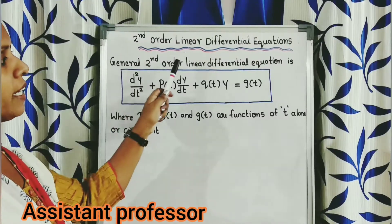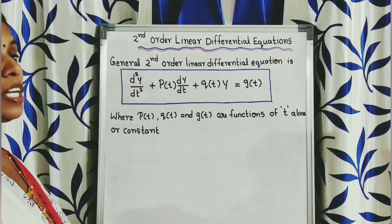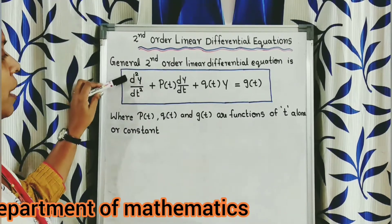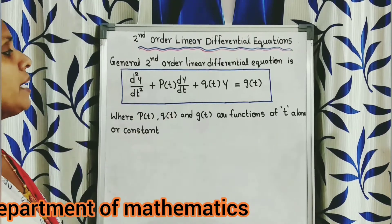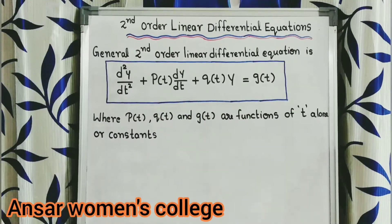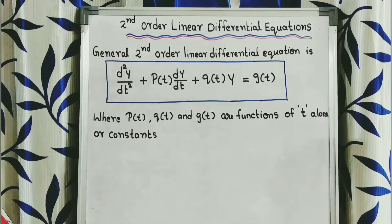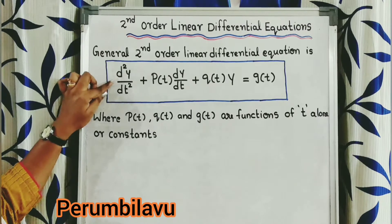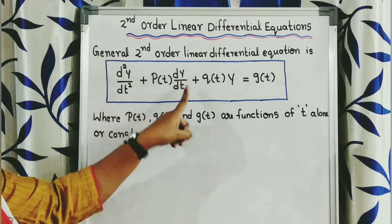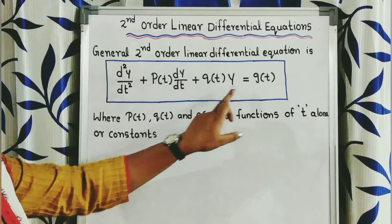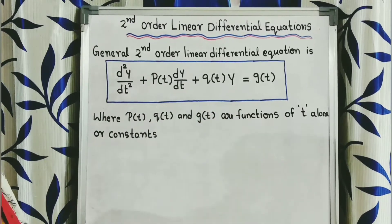The general second order linear differential equation is d²y/dt² + p(t)·dy/dt + q(t)·y = g(t), where p(t), q(t), and g(t) are functions of t alone or constants.